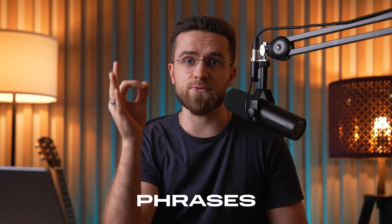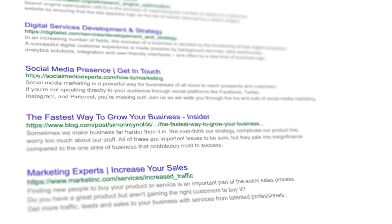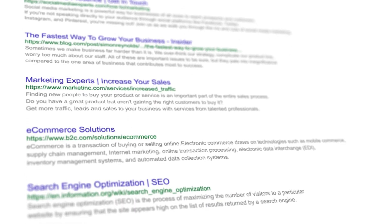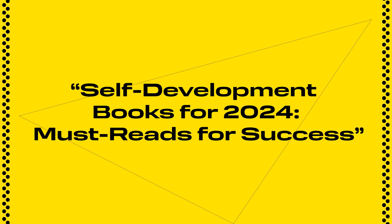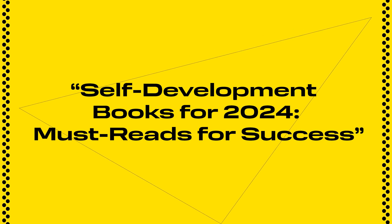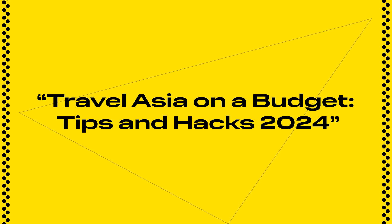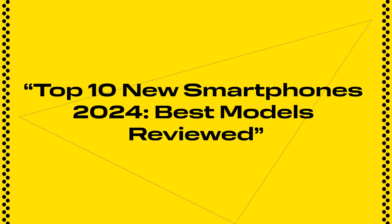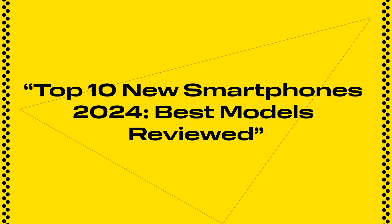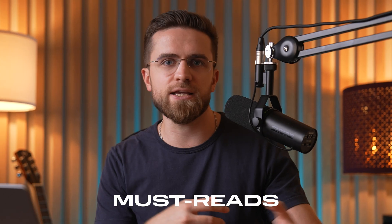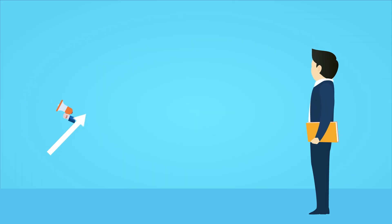Include precise search phrases or popular keywords related to your topic — this will boost your chances of showing up in search results. Your title should be informative and to the point, so YouTube's algorithm and your viewers can immediately grasp the subject. Examples could be like 'Self-Development Books for 2024: Must-Reads for Success,' 'Travel Asia on a Budget: Tips and Hacks 2024,' or 'Top 10 New Smartphones 2024: Best Models Reviewed.' Titles like these grab attention and include keywords like 'must-reads,' 'top 10,' 'budget travel,' and so on. This helps your video rank on YouTube and Google.